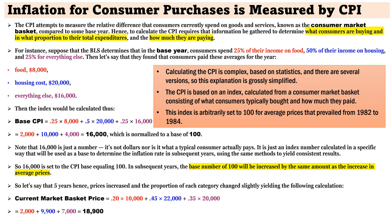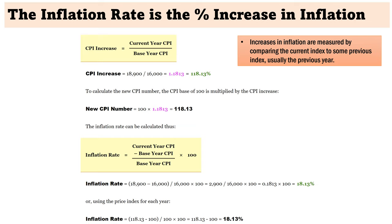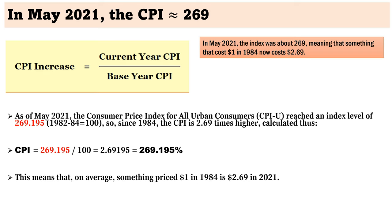Inflation for consumer purchases is measured by the Consumer Price Index, or CPI. Calculating the CPI is complex, based on statistics, and there are several versions, so this explanation is grossly simplified. The CPI is based on an index calculated from a consumer market basket consisting of what consumers typically bought and how much they paid. This index is arbitrarily set to 100 for average prices that prevailed from 1982 to 1984. Increases in inflation are measured by comparing the current index to some previous index, usually the previous year. In May 2021, the index was about 269, meaning that something that cost $1 in 1984 now costs $2.69.